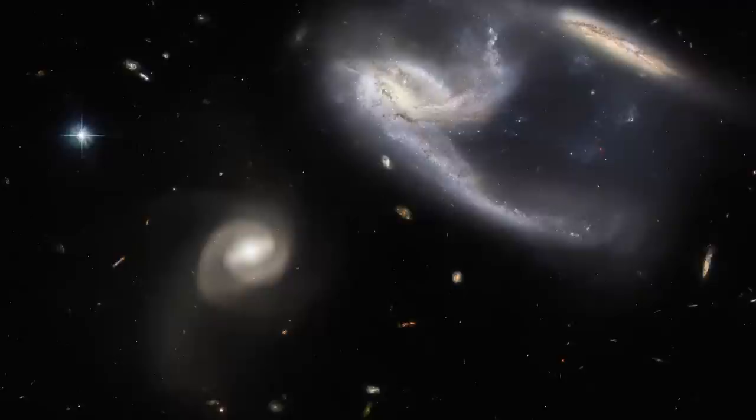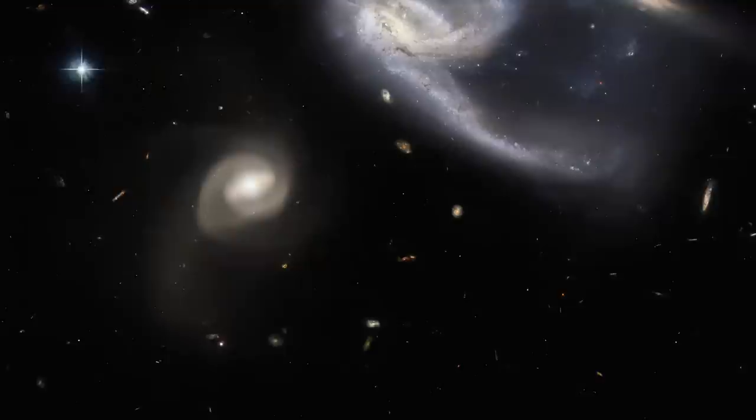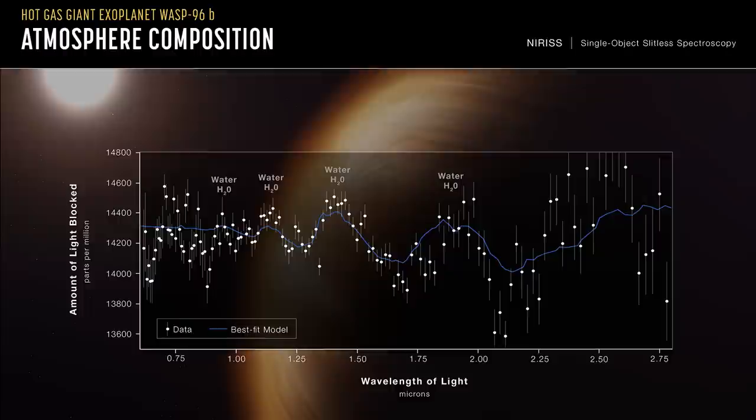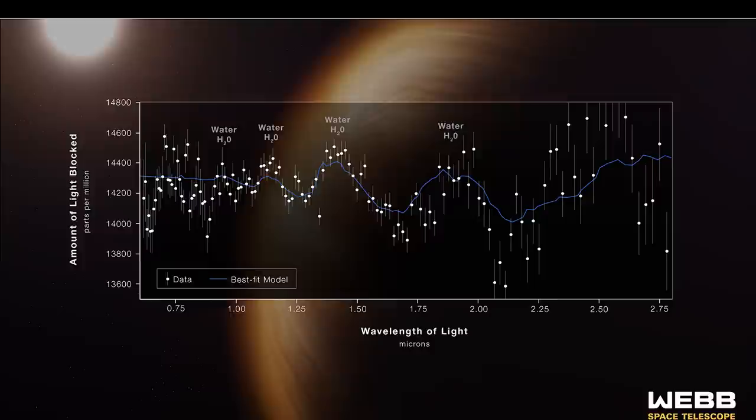Well, on June 21, Webb's spectrograph examined WASP-96 light for 6.4 hours as the planet transited the star's desk. And the spectrum shows the unmistakable signature of water, the presence of haze, and evidence of clouds which were thought not to exist based on previous observations.